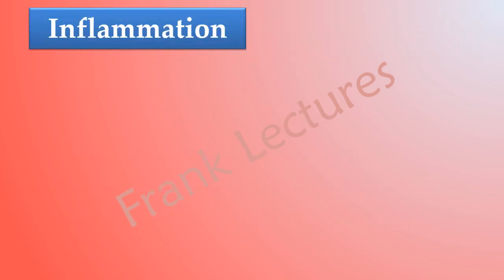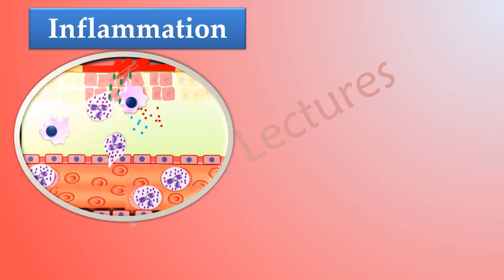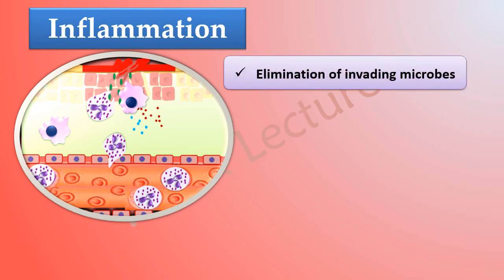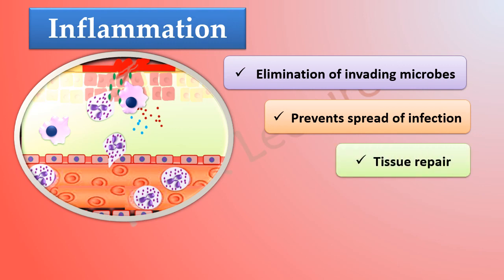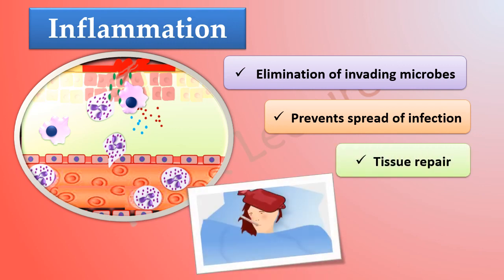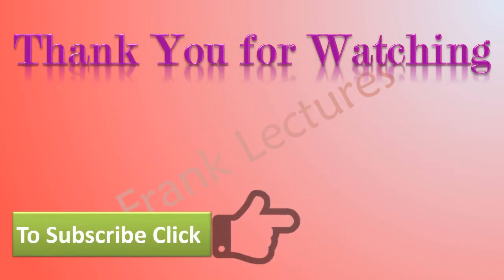In this video lecture, we studied inflammation, which is a local defensive response in case of tissue injury. Inflammation works toward eliminating microbes at the site of injury, prevents spread to other tissues, and helps in tissue repair. We also studied fever, which is an abnormally high body temperature that inhibits the growth of microbes and speeds up body reactions that aid repair. Fever occurs during infection and inflammation.